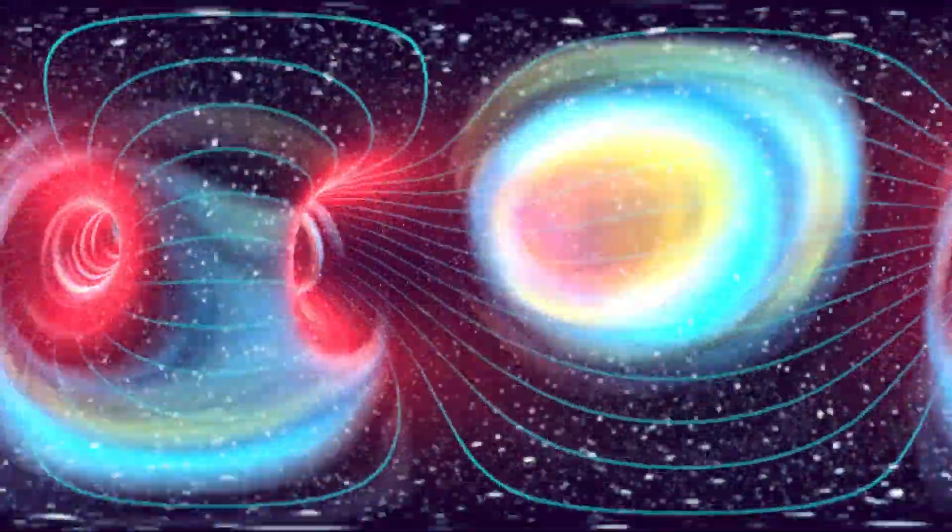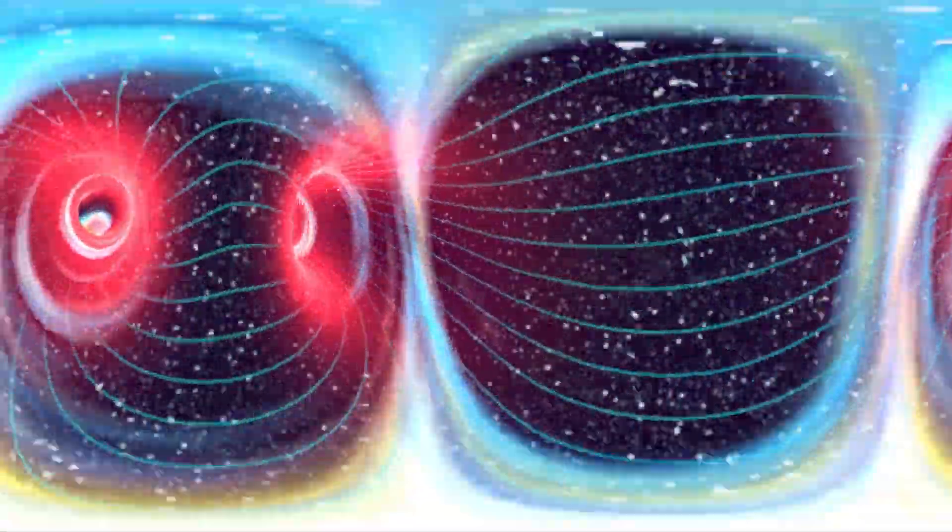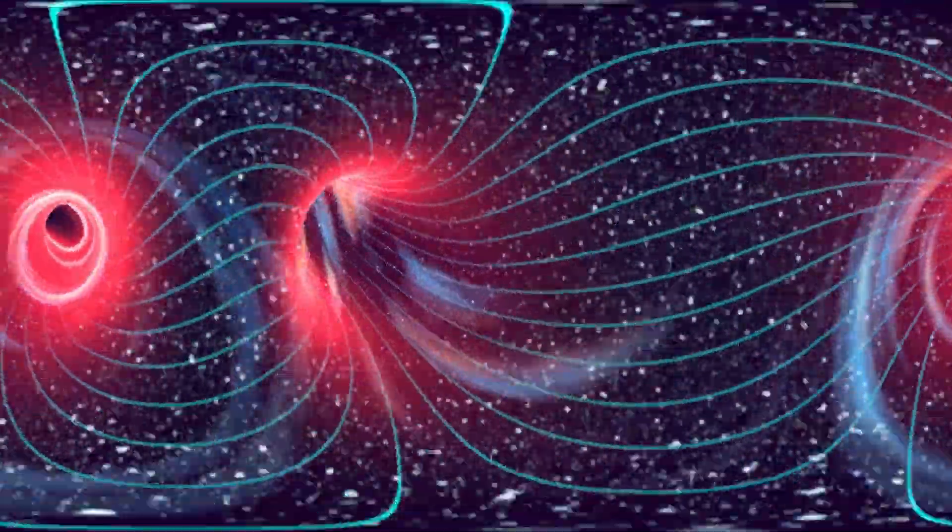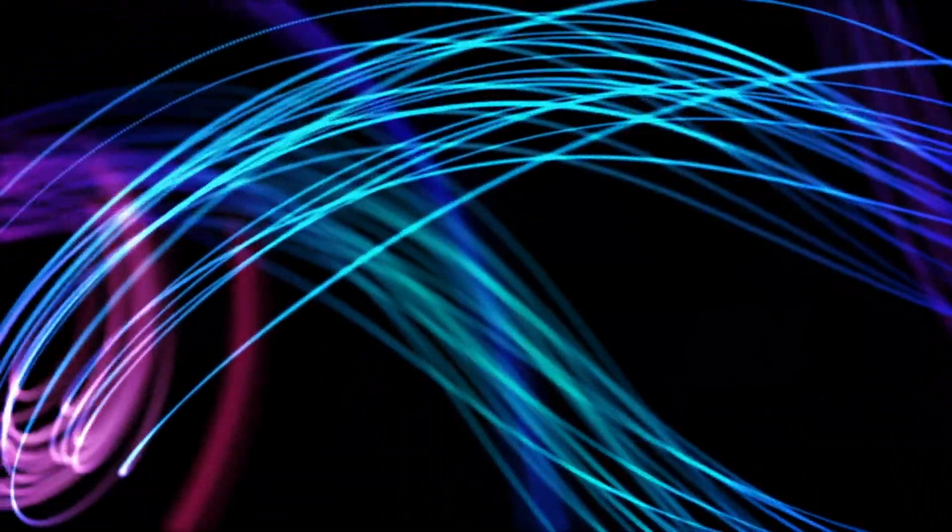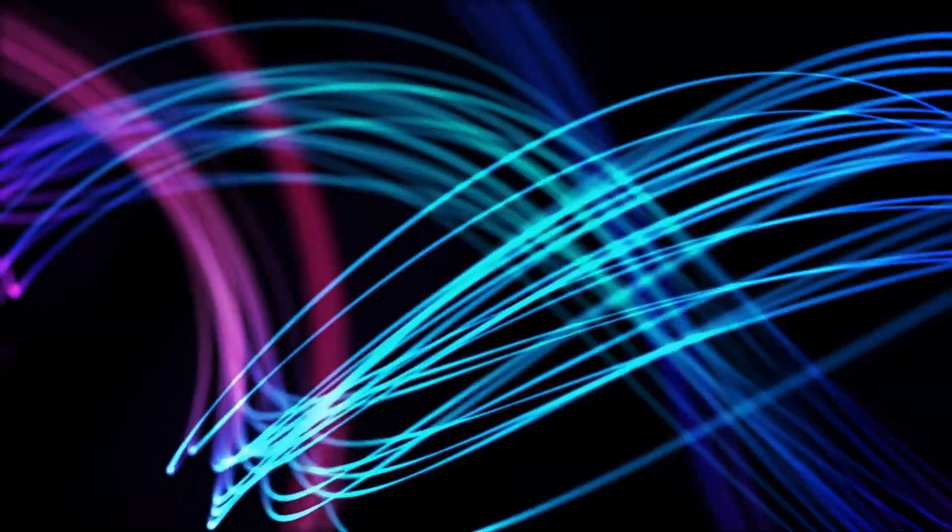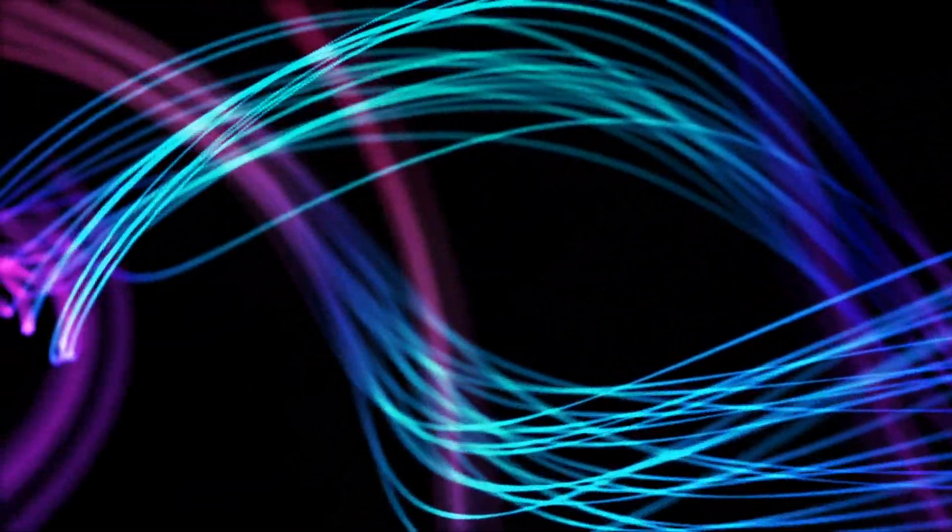This aligns with theories such as string theory and cosmological models that whisper of dimensions beyond the familiar three-spatial and one-temporal dimensions. String theory, for example, suggests that the universe is composed of tiny vibrating strings that exist in a ten-dimensional space-time, with the extra six dimensions curled up into a very small size. Wormholes then are hypothesized to be a bridge between two locations in the higher dimensional space, allowing for faster-than-light travel.